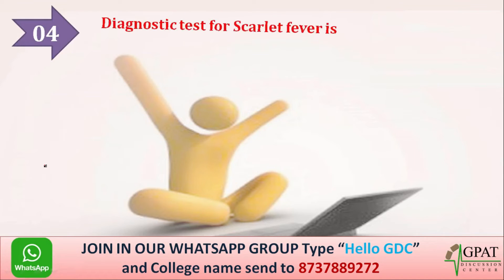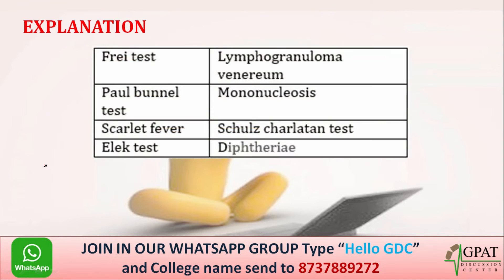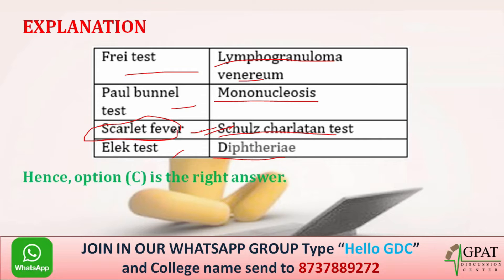Next question: the diagnostic test for scarlet fever is — option A, Frei test; option B, Paul-Bunnell test; option C, Schultz-Charlton test; option D, Elick test. The correct answer is option C, the Schultz-Charlton test. The Frei test is used for lymphogranuloma venereum, the Paul-Bunnell test for mononucleosis, and the Elick test for diphtheria.